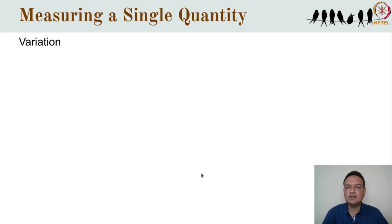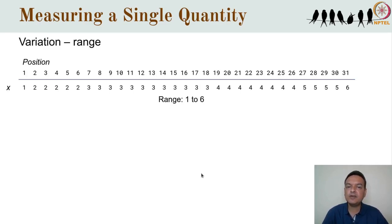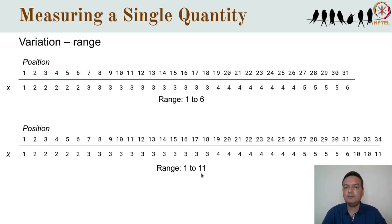Apart from central tendency, the other key thing we want to understand about a single quantity is its variation — both because it's interesting in its own right, and for what it implies about other aspects of data analysis and interpretation. The simplest and most crude measure of variation is the range — the difference between the smallest and largest values. But the range is unsatisfactory for two reasons: first, it is not a robust measure, so a single value can change it considerably; and second, most data distributions are clustered around the central tendency, and the range doesn't tell us where the majority of data lie.